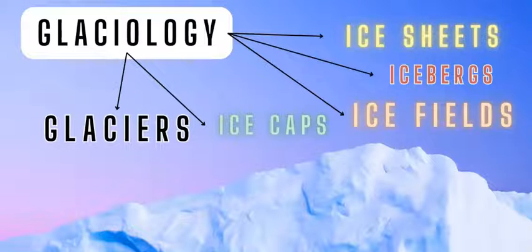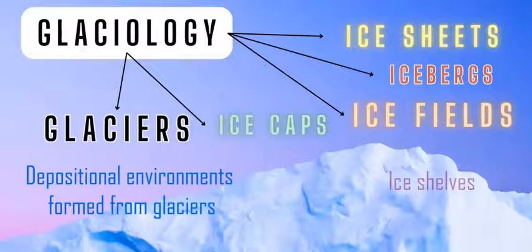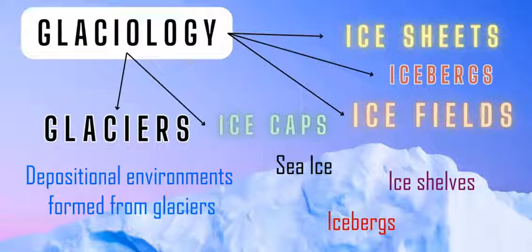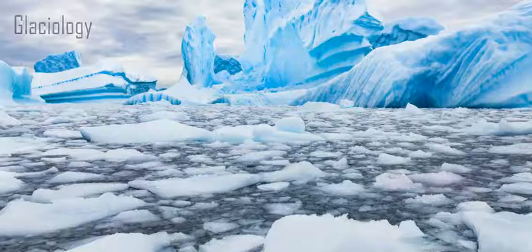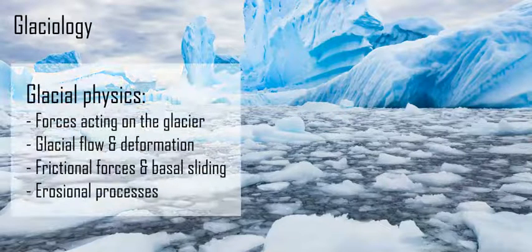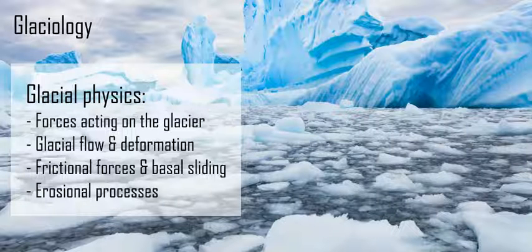It also covers all these amazing depositional environments and landforms like eskers, terminal moraines, lateral moraines, and all these great things that fall under glaciology — including the physics of the ice: the mass, the composition, the friction, movements, and deformation of the ice as it moves downhill through gravity.